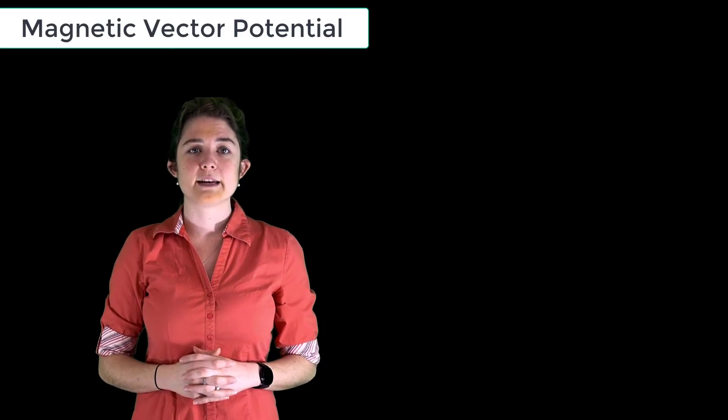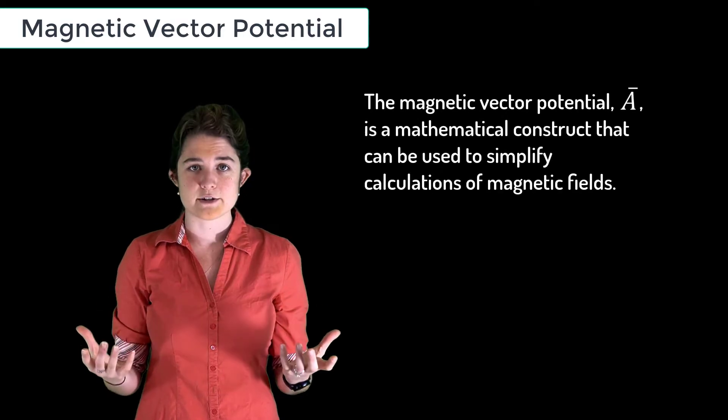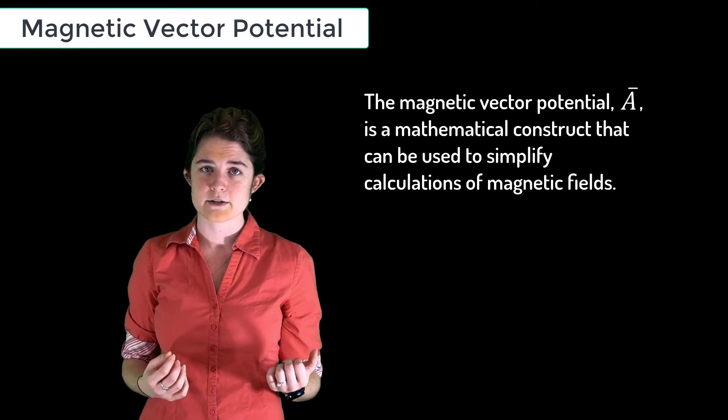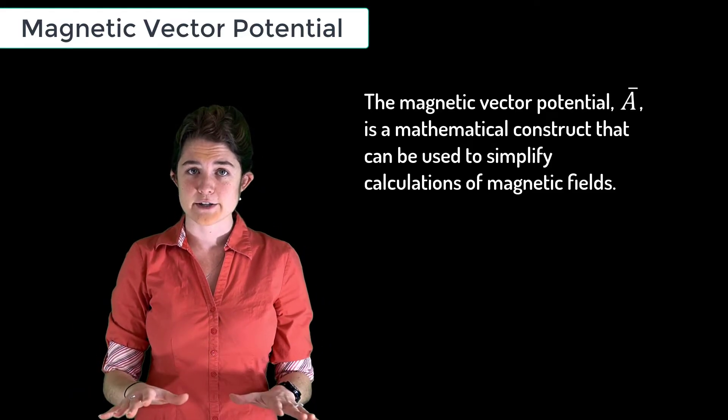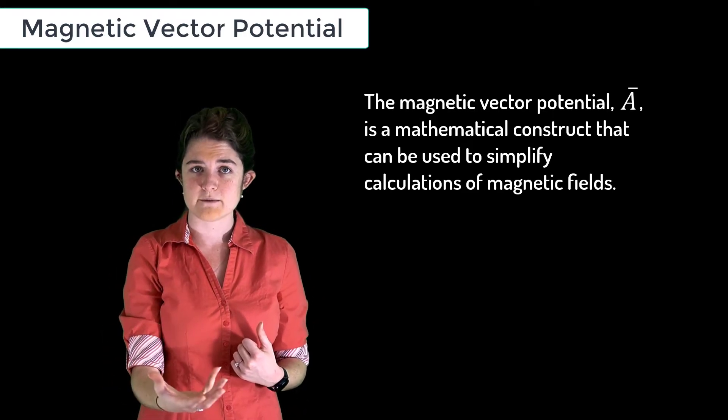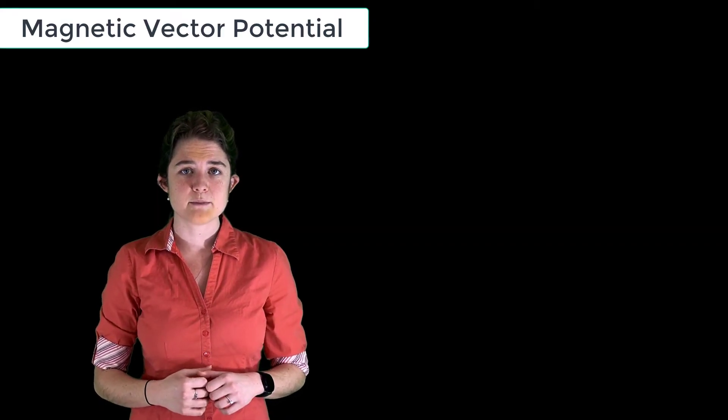I'm going to introduce magnetic vector potential. Magnetic vector potential is a mathematical construct that can help simplify calculations. It doesn't have obvious physical significance on its own, but it is a useful tool for calculating magnetic fields, which do have physical significance. To understand where magnetic vector potential comes from...